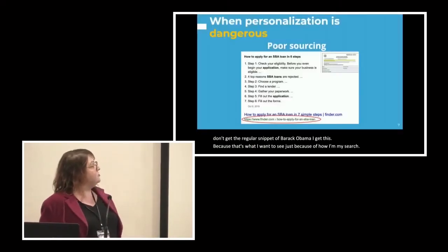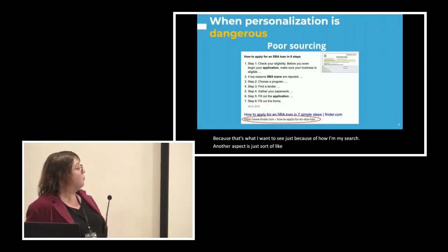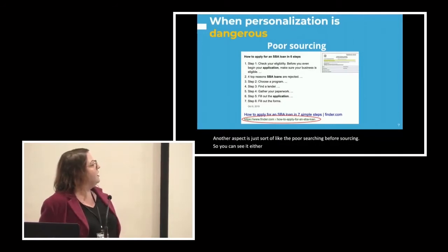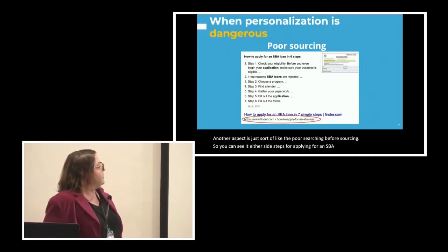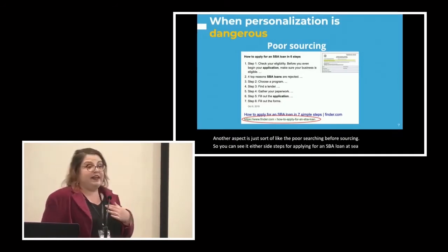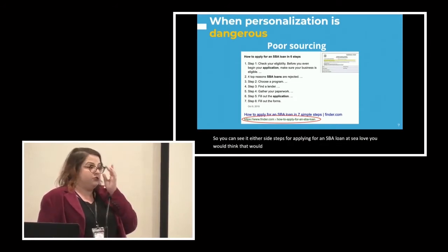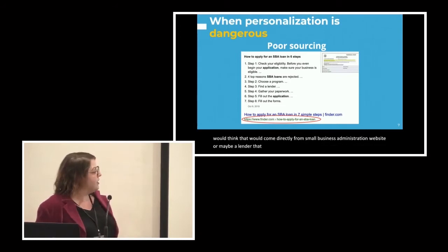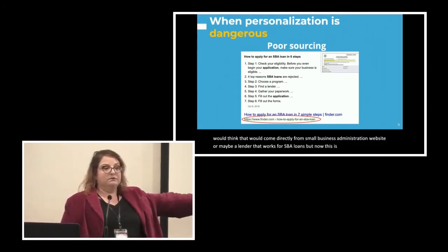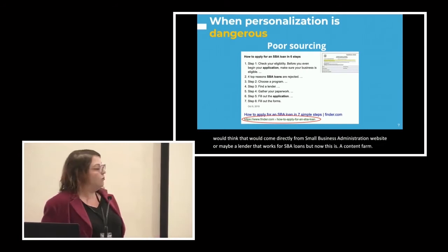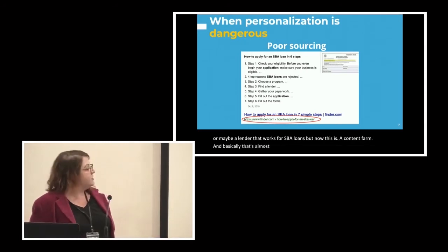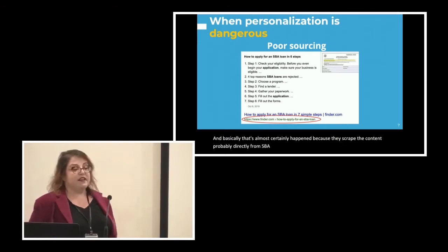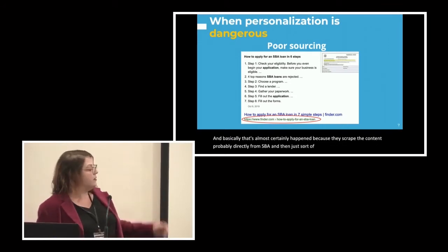Another issue is poor sourcing. Steps for applying for an SBA loan — you'd expect that from the Small Business Administration website or a legitimate SBA lender, but instead it comes from a content farm that almost certainly scraped the content directly from the SBA site and optimized it to land in the snippet.